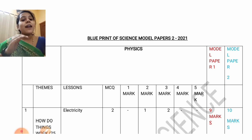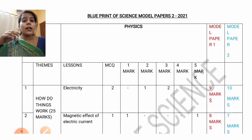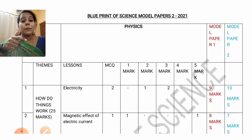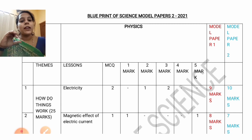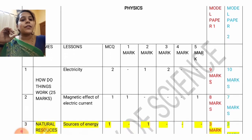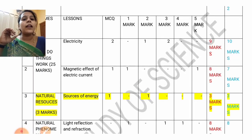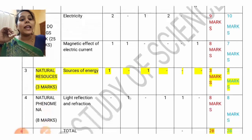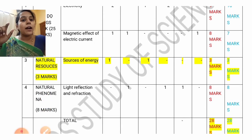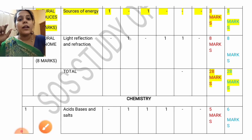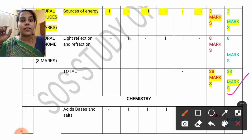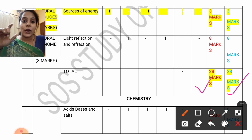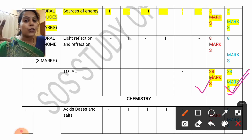Let me start with physics. In this video, I will tell you about the lessons so you have a clear idea. The total number of marks allotted for physics is 28 marks — 28 marks in model question paper 1 and also 28 marks in model question paper 2. There is no change in the marks.